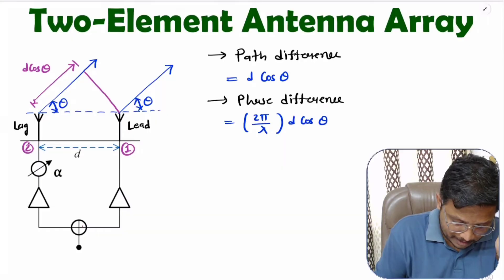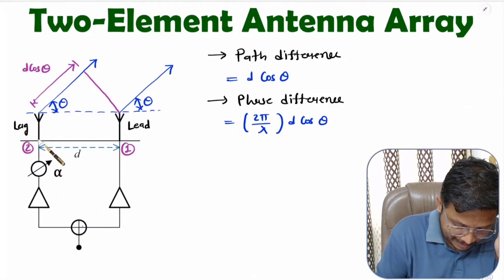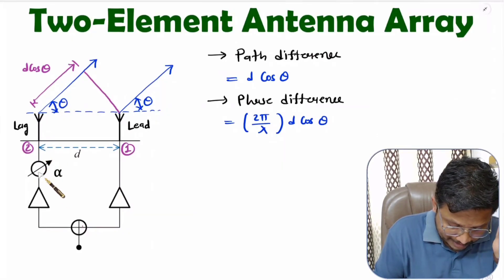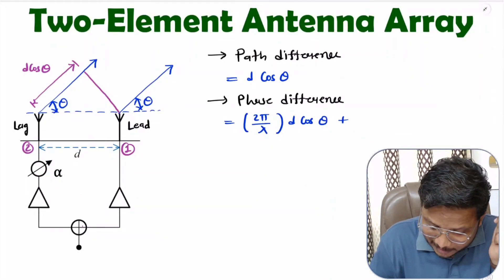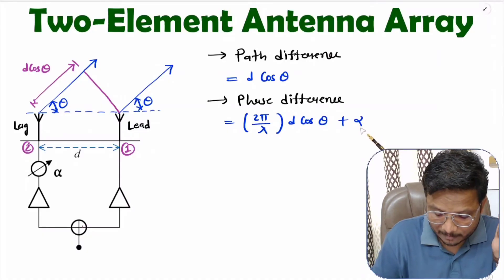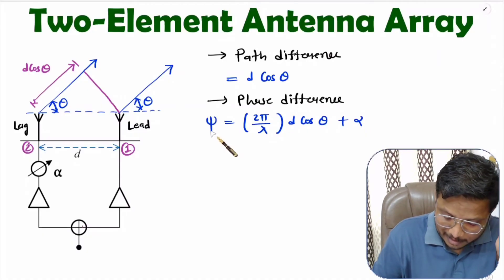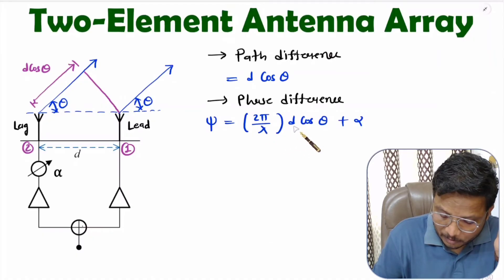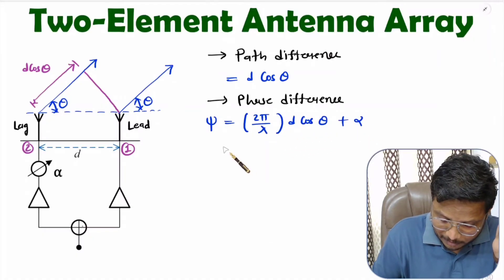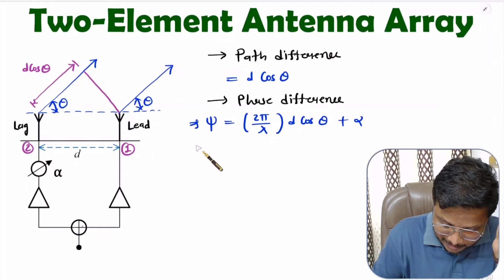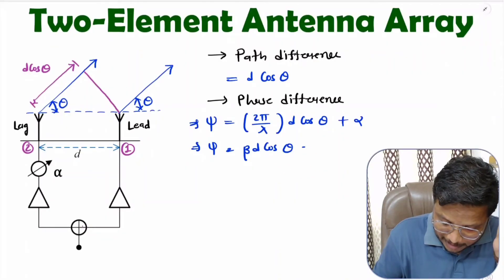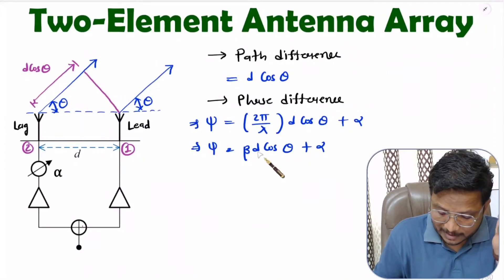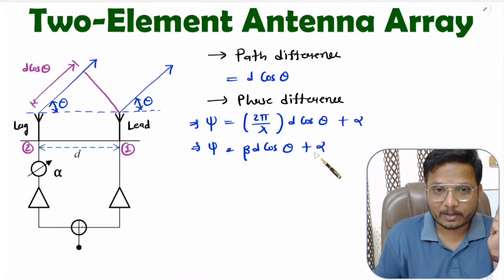With the second antenna element, we are connected with a phase of alpha — that is the initial phase. So I need to add that initial phase as well. So the total phase difference ψ is 2π/λ into D cos theta plus alpha, which equals β·D cos theta plus alpha.